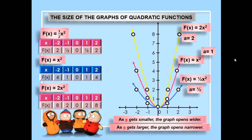The blue curve represents the function where a equals one-half. The pink curve represents the function where a equals 1. And the yellow curve represents the function where a equals 2. We notice that as a gets smaller, the graph opens wider, and as a gets larger, the graph opens narrower.